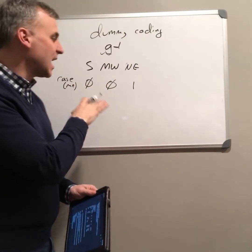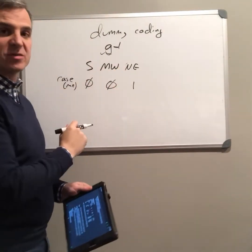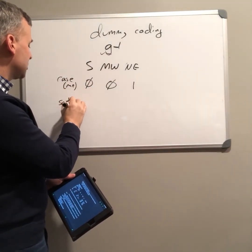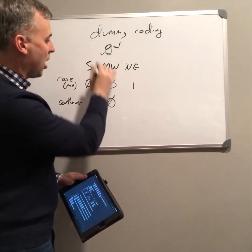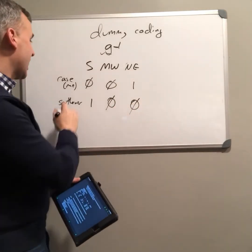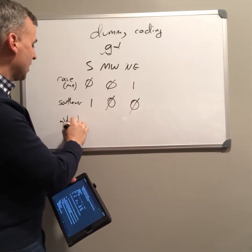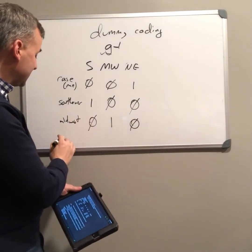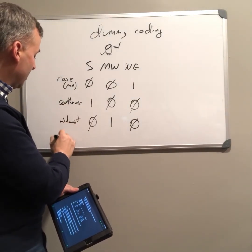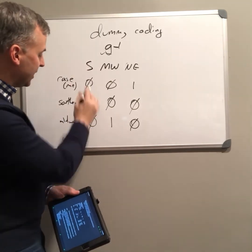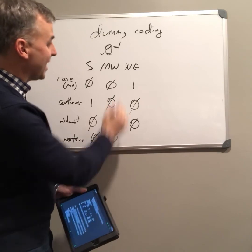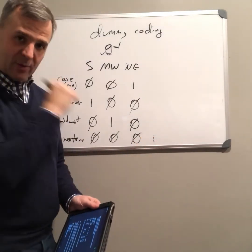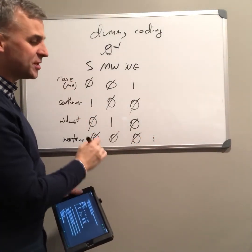What I really want to get across is this idea that we set a value for each variable based on the status of that particular case. Someone from the south — Joe Southerner — gets a one on south, zero on midwest, and zero on northeast. Jane Midwesterner gets a zero on south, one on midwest, and zero on northeast. And Bobby from the west — Cowboy Bob — gets zero for south, zero for midwest, and also zero for northeast. If we had west as a variable, he would have a one for that. So that's how we do our dummy coding.